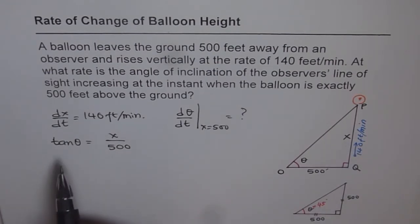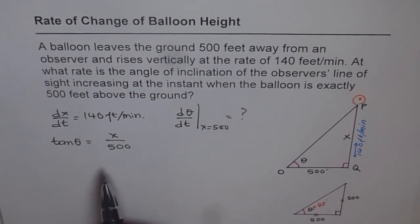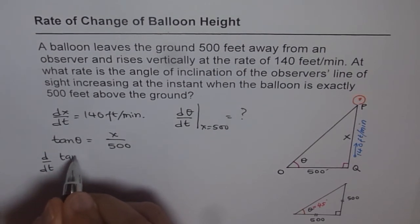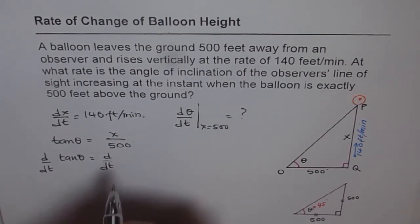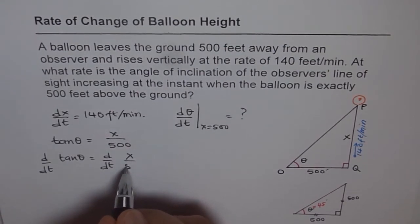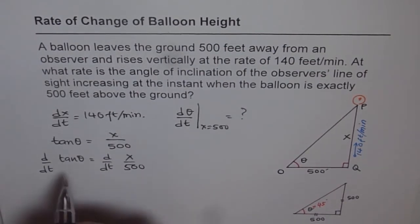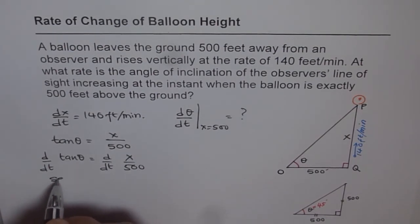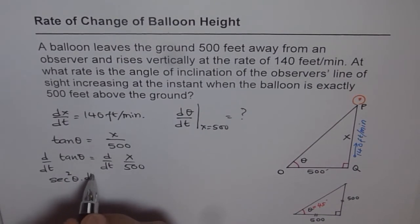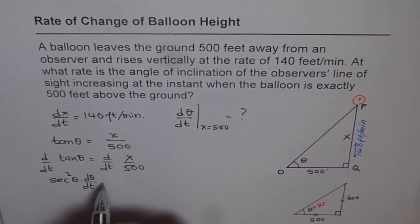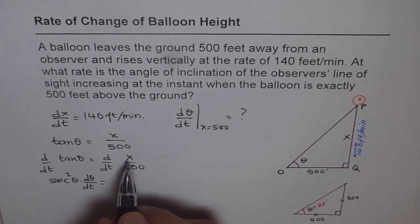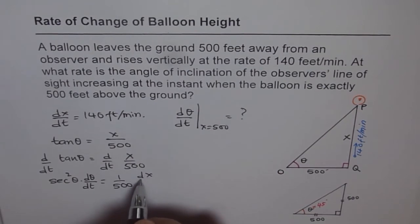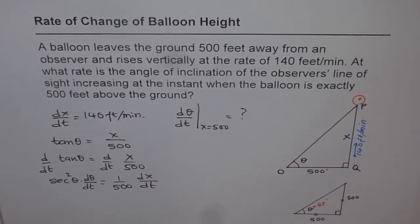Now we can differentiate both with respect to time. So if we do d/dt of tan θ and d/dt, that means differentiating both with respect to time, what do we get? Differentiating tan θ we get sec²θ. So we get sec²θ times dθ/dt. That is the chain rule. And here, x over 500 is just 1 over 500 dx/dt.